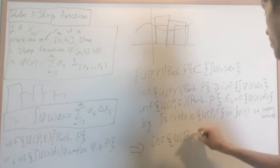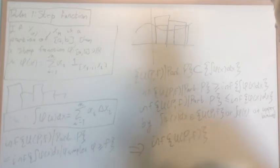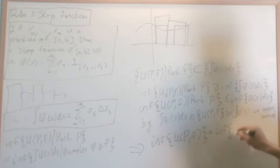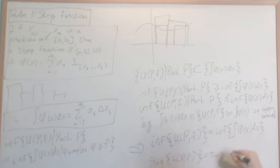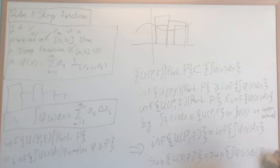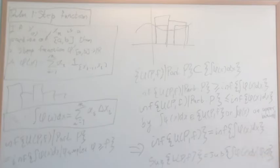So the infimum of U(P, f) equals the infimum of the integrals of φ(x) dx, and similarly you can prove that the supremum of the lower sums equals the supremum of the integral of φ(x) dx for φ ≤ f. We can now rephrase the Riemann integral so that the lower and upper integrals are expressed in terms of step functions.